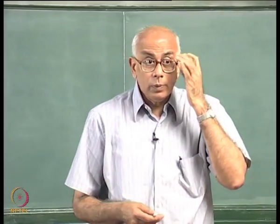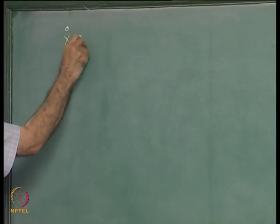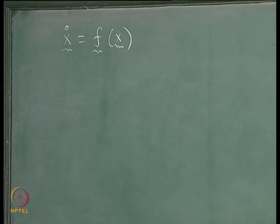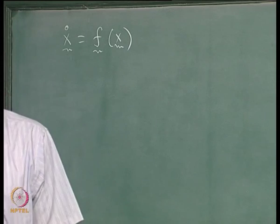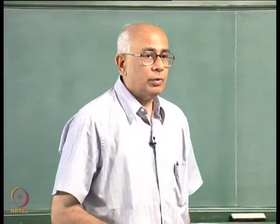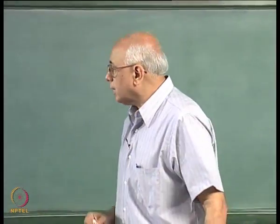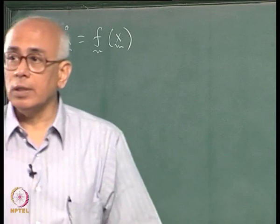We go back to recapitulate what we were doing last time. We discovered that the general dynamical system x-dot equals f of x has critical points given by the roots of the vanishing of the vector field. In two dimensions, the linearized matrix L near a critical point has eigenvalues that determine the nature of the flow, classifying critical points into saddle points, nodes, spiral points, and centers.